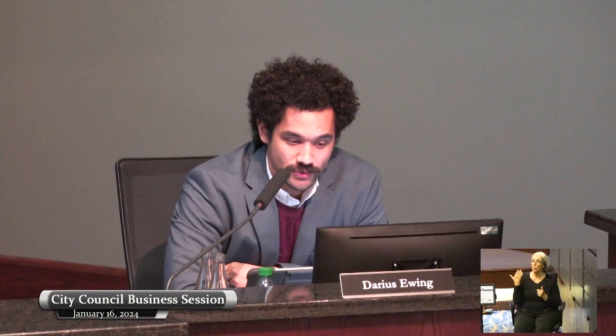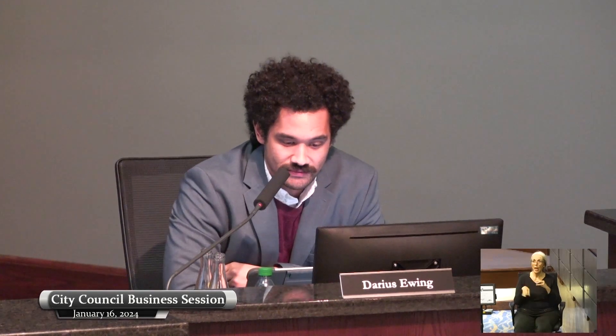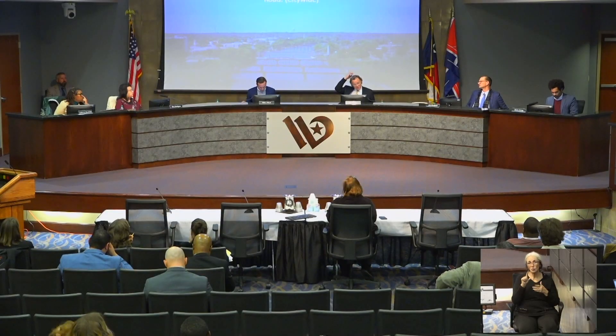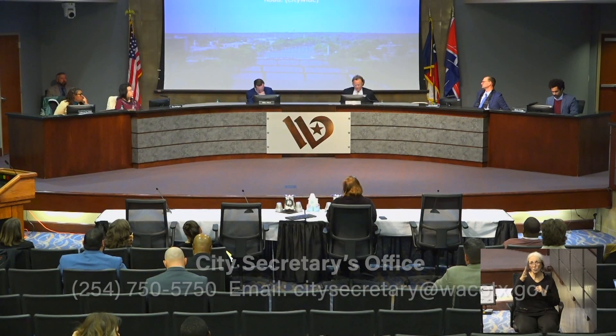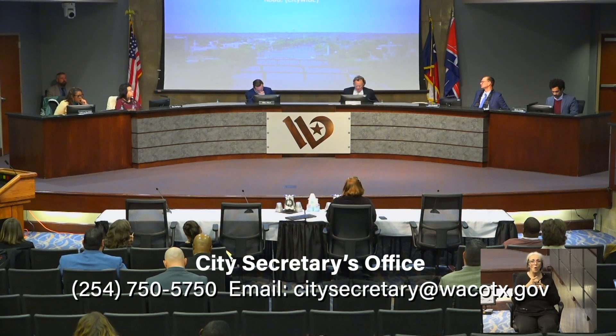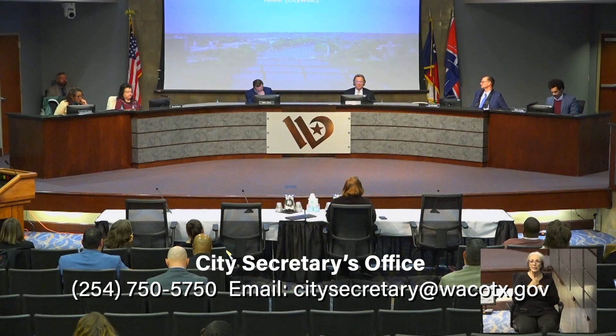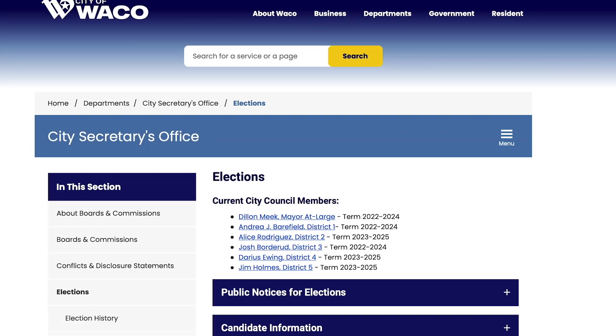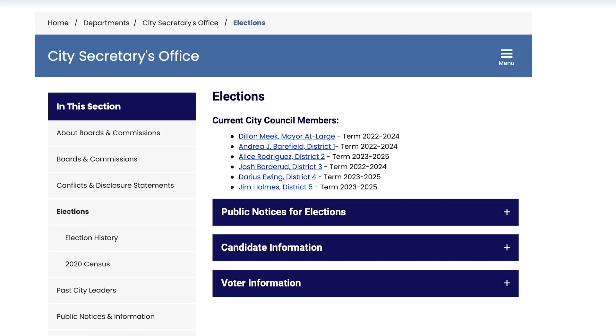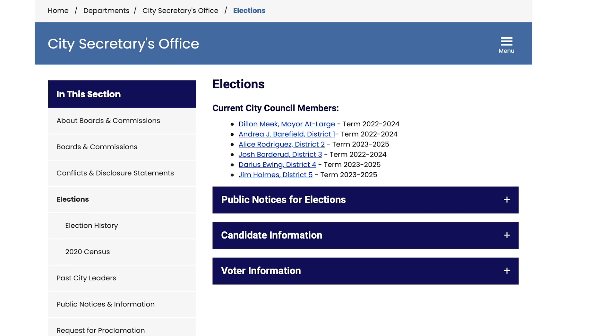Residents interested in filing for a place on the ballot must live in their respective council district for at least six months to run for that position. Applications for a place on the ballot should be notarized and submitted to the City Secretary's office. Applications can be submitted in person at City Hall, by mail, or by email. Interested candidates can contact the City Secretary's office at 254-750-5750 or at citysecretaryatwacotx.gov. The candidate packet is available online at waco-texas.com/elections or at City Hall.